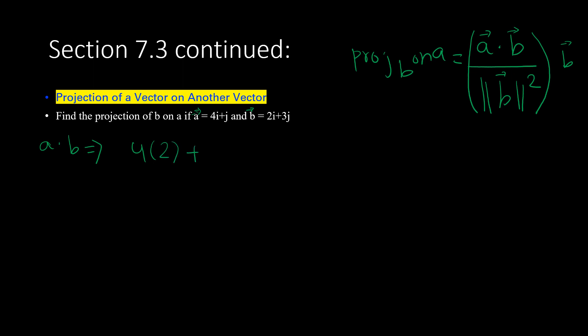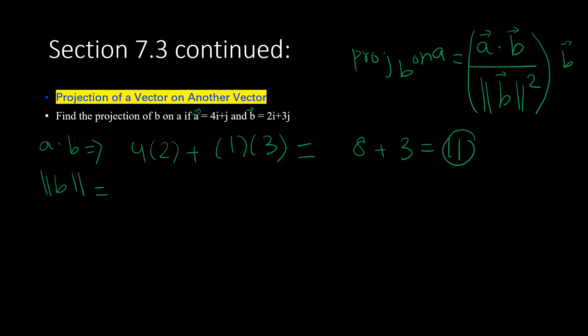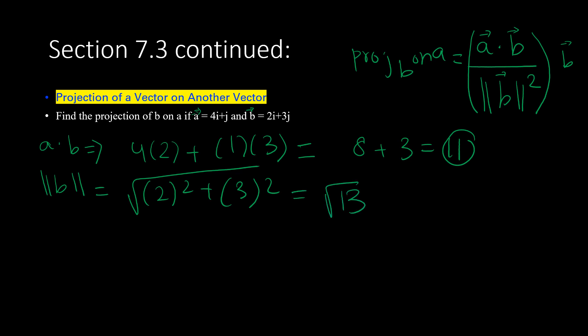That gives us 8 plus 3, which is 11. So my dot product is 11. Now let's find the magnitude of B. The magnitude of B is the square root of 2 squared plus 3 squared, which gives the square root of 13.